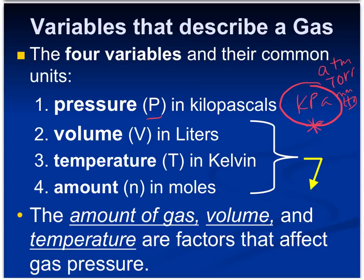Volume is measured in liters. Temperature is in Kelvin, so if you have a Celsius temperature, remember you're going to have to convert it into Kelvins. The amount of gas is measured in moles. The amount of gas, volume, and temperature are the factors that affect gas pressure, and these are the different variables we're going to be using or calculating.